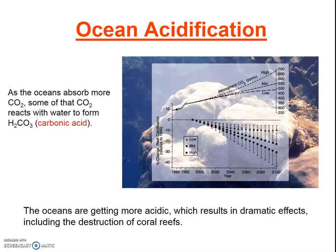Next let's look at a range-of-tolerance issue for pH. As the oceans absorb more carbon dioxide, some of that CO2 reacts with water to form carbonic acid. Coral and other shelled organisms essentially dissolve in acidic conditions, making it much more difficult for all corals and shelled organisms to survive as ocean acidity increases.